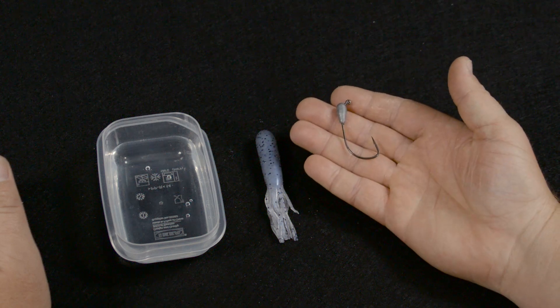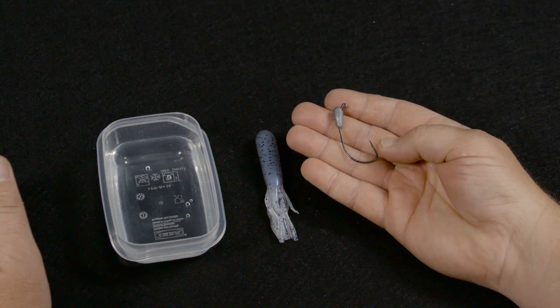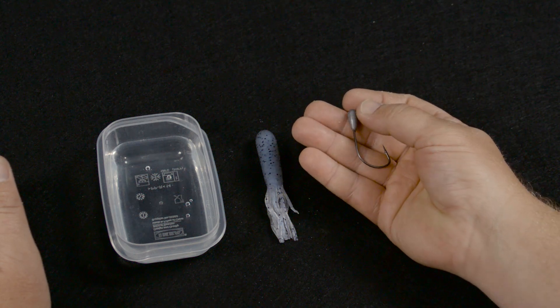The thing you're going to need most is an extra wide gap jig head that is designed for a tube. It has that cylindrical head on it.